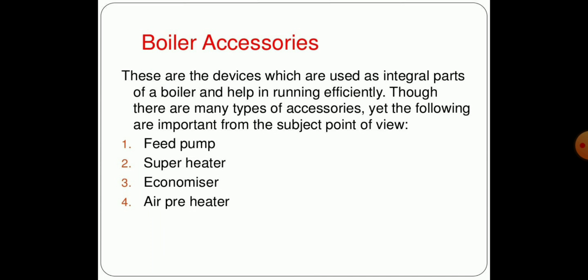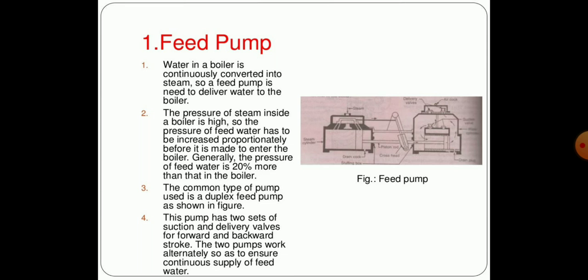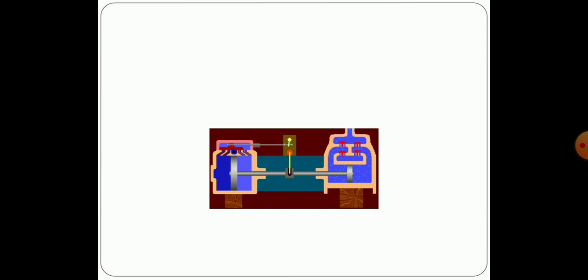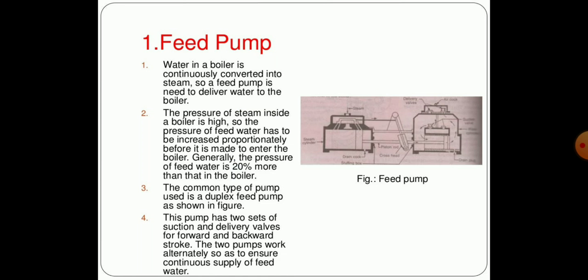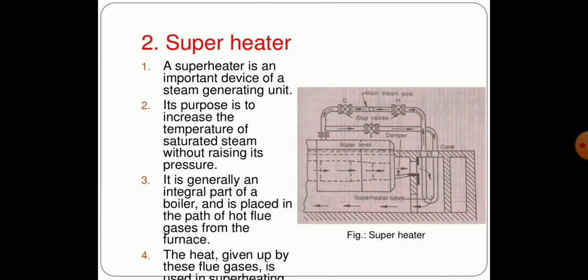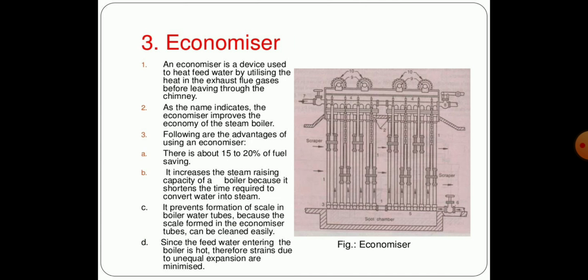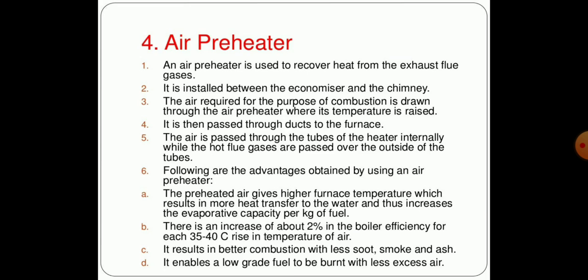What are the boiler accessories required? These are feed pump, superheater, economizer, and air preheater. The various functions of air preheater and feed pumps are for particular use of the body of the boiler.